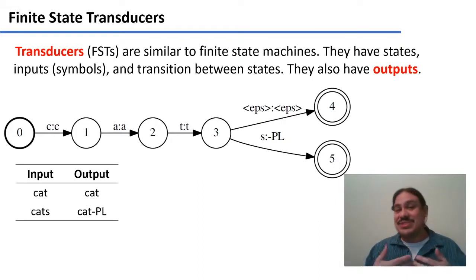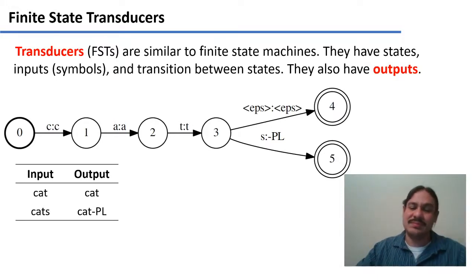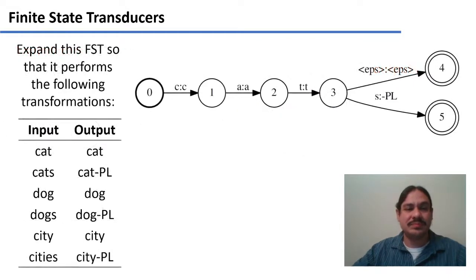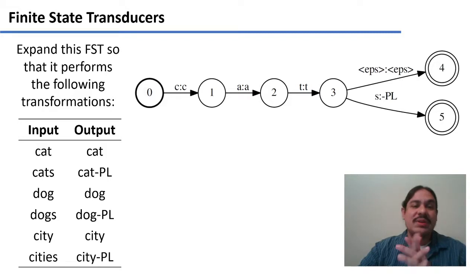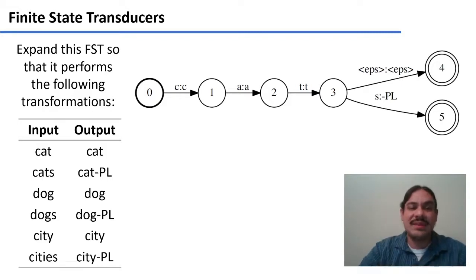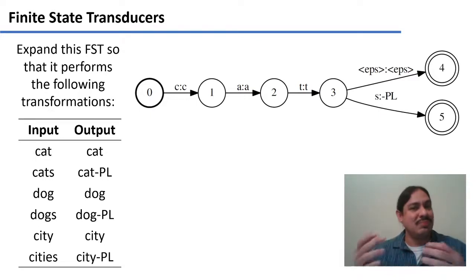So this transducer transformed a word in English into a description of that word in English. We could expand the finite state transducer so that it can take not only "cat" and "cats", but also "dog" and "dogs", and "city" and "cities".